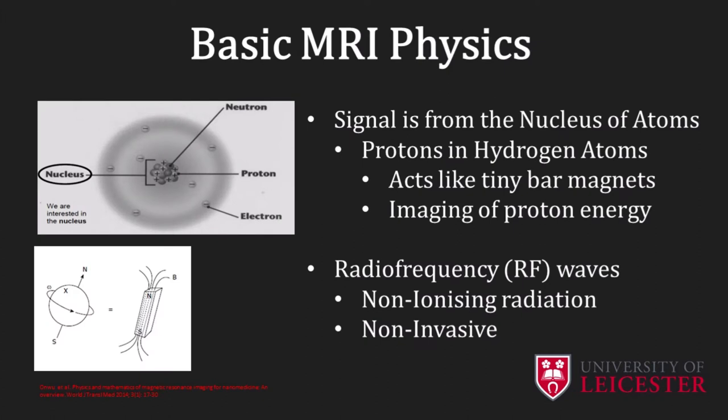MRI techniques are based on the phenomenon of nuclear magnetic resonance, NMR. NMR can be accurately explained using quantum mechanics, but the basic principles for imaging can often be described using classical mechanics. A simple model of an atom shows that it consists of a nucleus made of protons and neutrons, surrounded by a cloud of electrons. MRI can be accomplished by detecting signals that originate from the nucleus of certain types of atoms that possess a quantum mechanical property called spin.